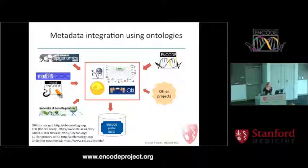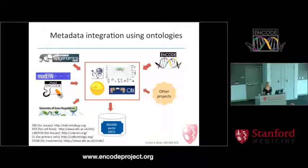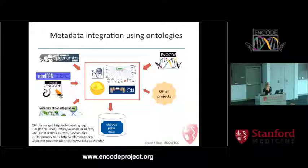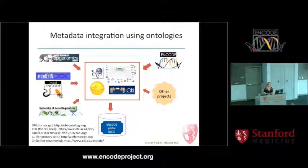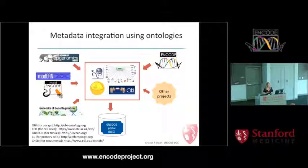At our project we're integrating not just ENCODE data, but also roadmap epigenomics, MOD ENCODE data, and the genomics of gene regulation. We may have other projects in the future. One of the tasks we do here is integrate all these data using ontologies and controlled vocabulary, so that what one person calls 'heart' and another person calls 'cardiac tissue' comes together as one item.